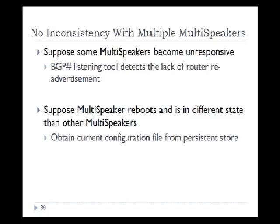Considering the multi-speaker setup, there could be inconsistency issues. If a multi-speaker becomes unresponsive when the controller sends a request to add or withdraw routes, how do we know the change was applied? We overcome this by having a BGP listener that listens for router re-advertisements — if we receive a re-advertisement for withdrawal or announcement, we know the router has removed or installed the route. If a multi-speaker reboots in a different state than others, it obtains its configuration from a persistent store, as shown in the prefix resiliency example.